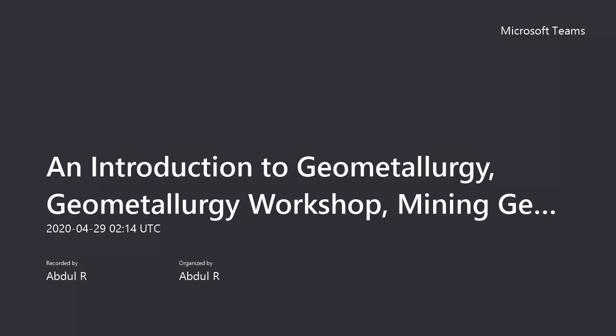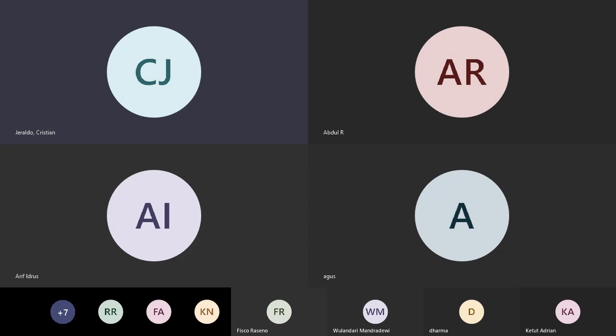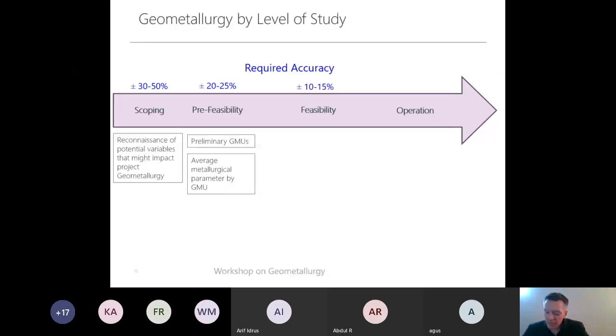Define the preliminary geometallurgical units. For each of these preliminary geometallurgical units, we need to put at least an average parameter in this GMU, as we see in the table at slides before.